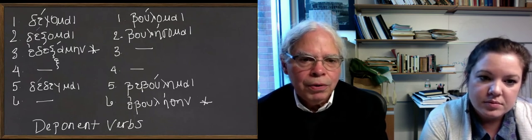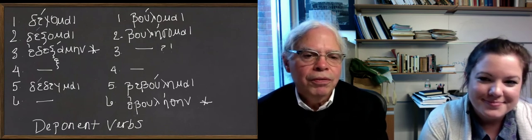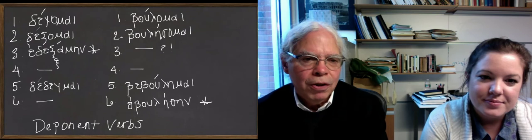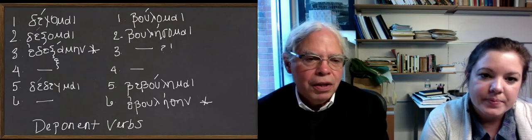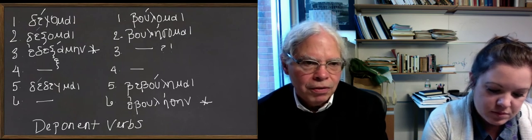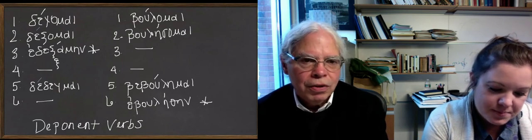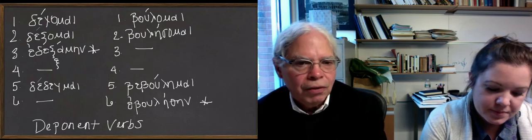But it has no aorist middle. And it has no third principal parts. So this is basically two types—there are two types of deponent verbs, exemplified by this distinction. There are those which have an aorist middle form, but no aorist passive. And there are those in which there is no aorist middle form, but the aorist passive functions as a middle form.